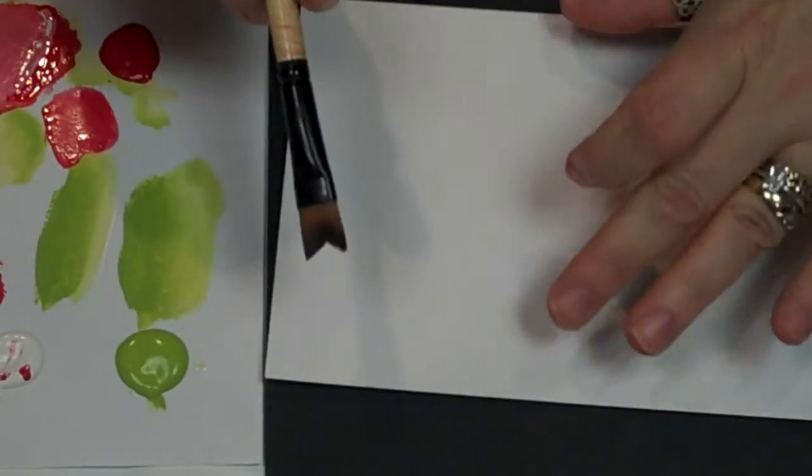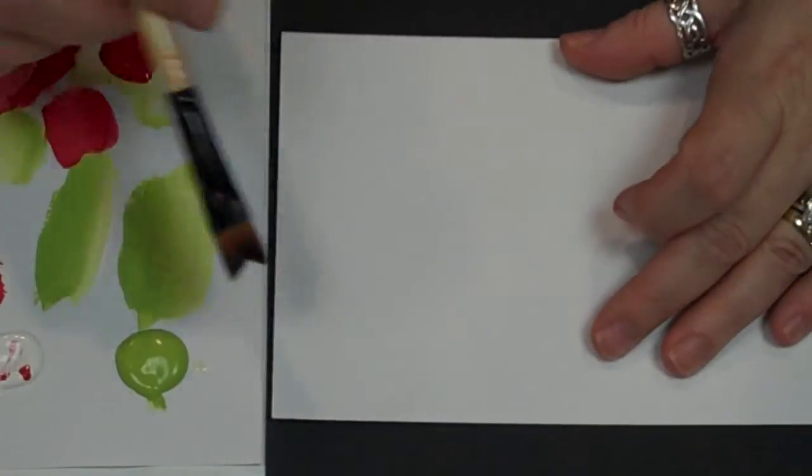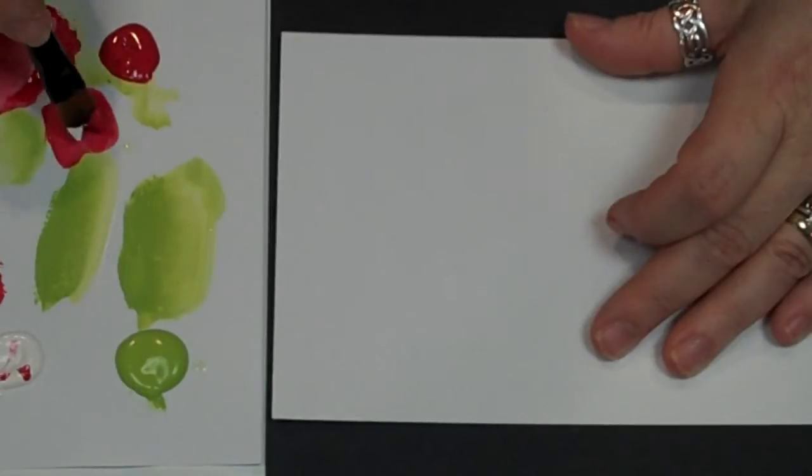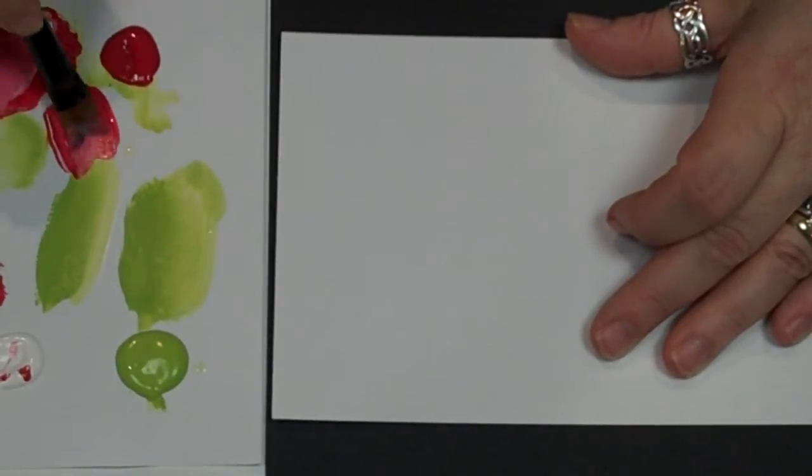I'm going to show you how to create flower petals using the Whale's Tail. I'm going to double load this with a little red and a little bit of white, and I'm going to blend it well to get the colors to meld.